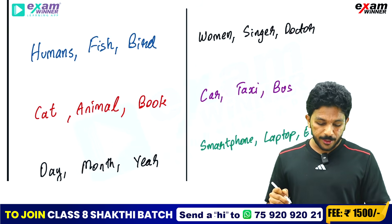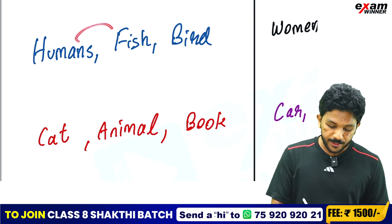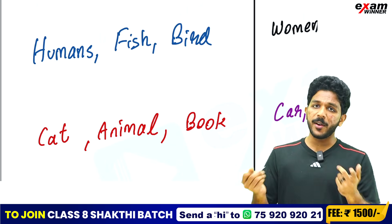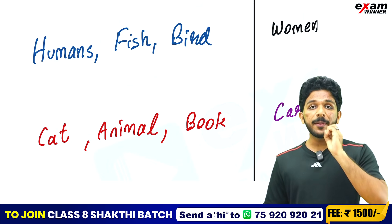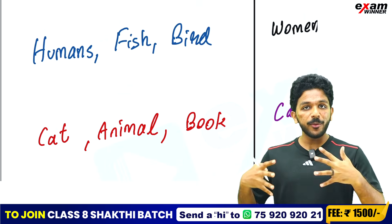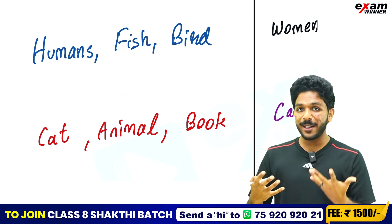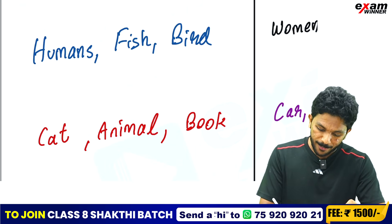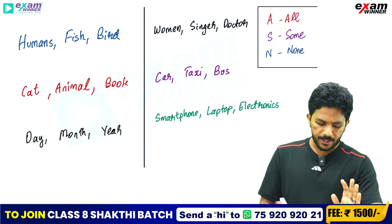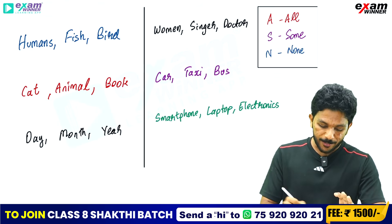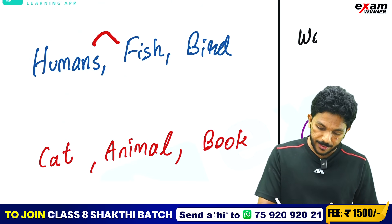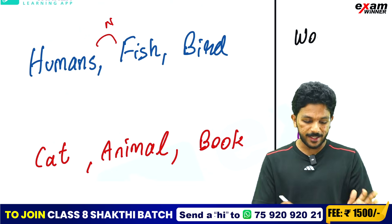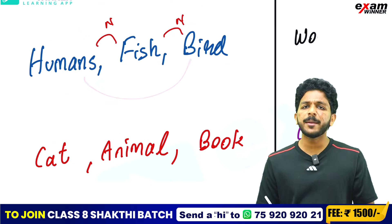Now, what are you going to do? Think about fish, humans, and birds. Humans and fish — are they in the same area? No. We can't say fish are human. Like fish and humans — none. Like fish and birds — none. Like humans and birds — none.